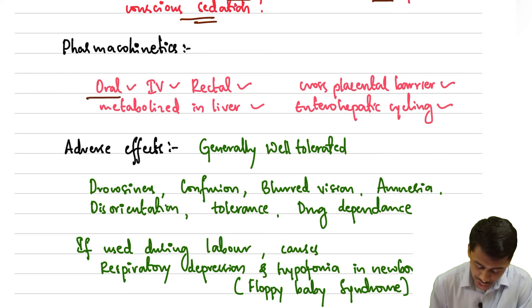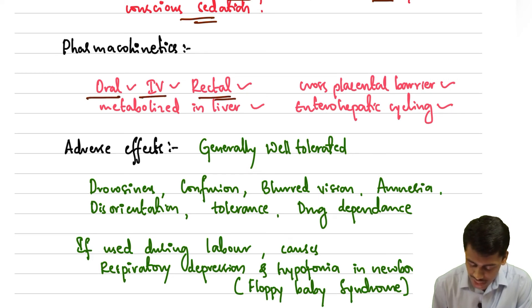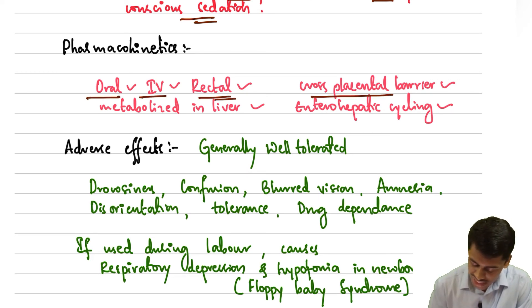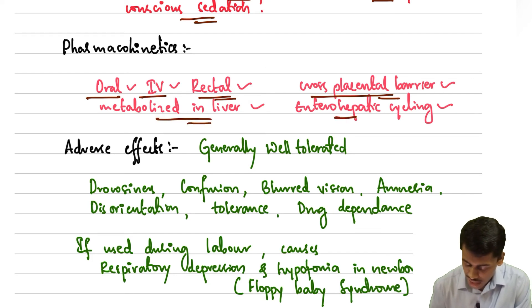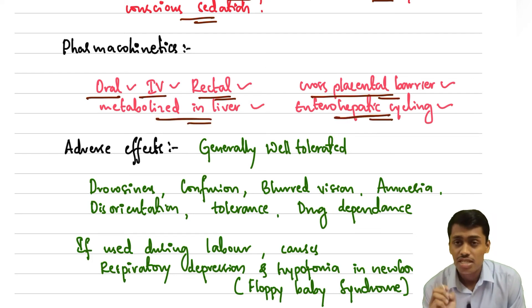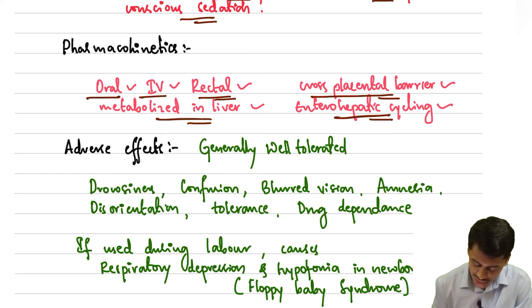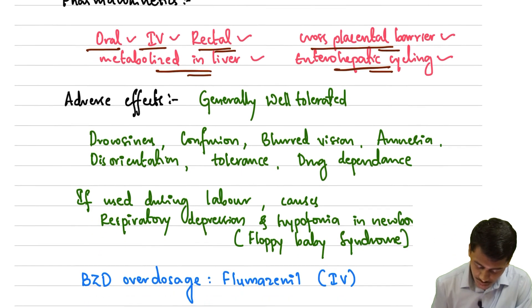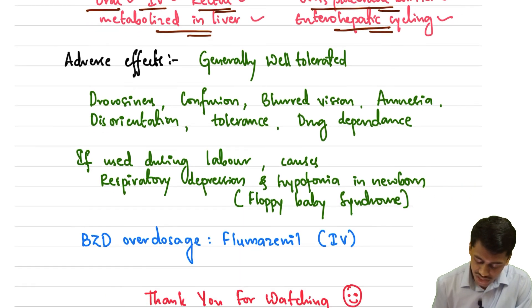Regarding pharmacokinetics, benzodiazepines are available as oral, IV, as well as rectal routes. They cross the placental barrier, are metabolized in the liver, and undergo enterohepatic cycling.